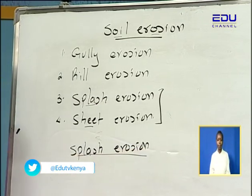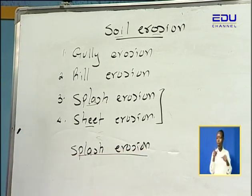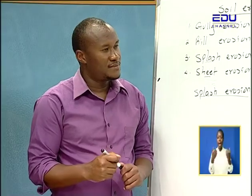Tell me something you remember about splash erosion. I remember splash erosion occurs when there is detachment of the topmost soil, especially when it rains. There are different places splash erosion can happen, and then there is transportation of the topmost soil.